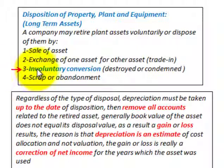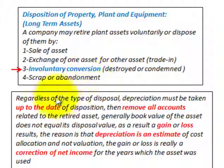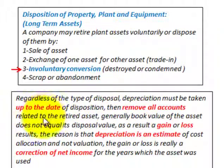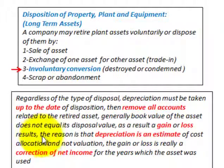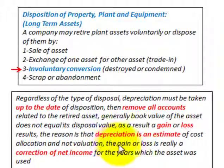Our example is going to be specifically looking at an involuntary conversion — a building destroyed by fire. Regardless of the type of disposal, depreciation must be taken up to the date of disposition. Then you remove all accounts related to the retired asset. Generally the book value does not equal its disposal value, so a gain or loss results, because depreciation is an estimate of cost allocation and not valuation. The gain or loss is really a correction of net income for the years the asset was used.